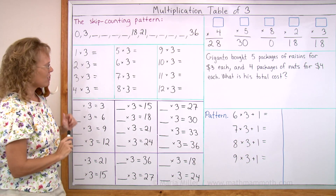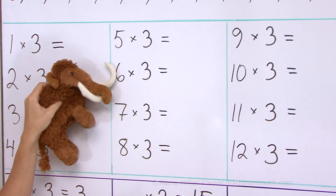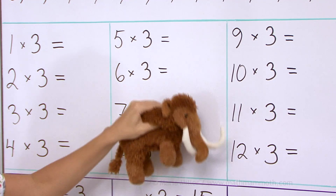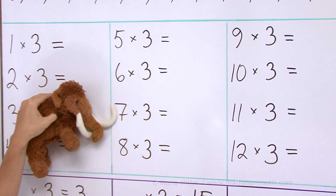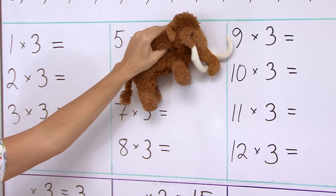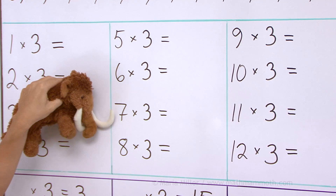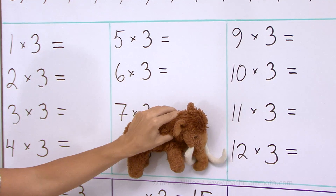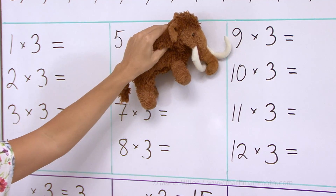Now we do the same but I'm not going to say the answers — actually Matthew, you can do it. 8 times 3? 6 times 3? 9 times 3? 12 times 3? 11 times 3? 4 times 3? 7 times 3? 5 times 3? 12 times 3? Nine times three? Okay, good job.